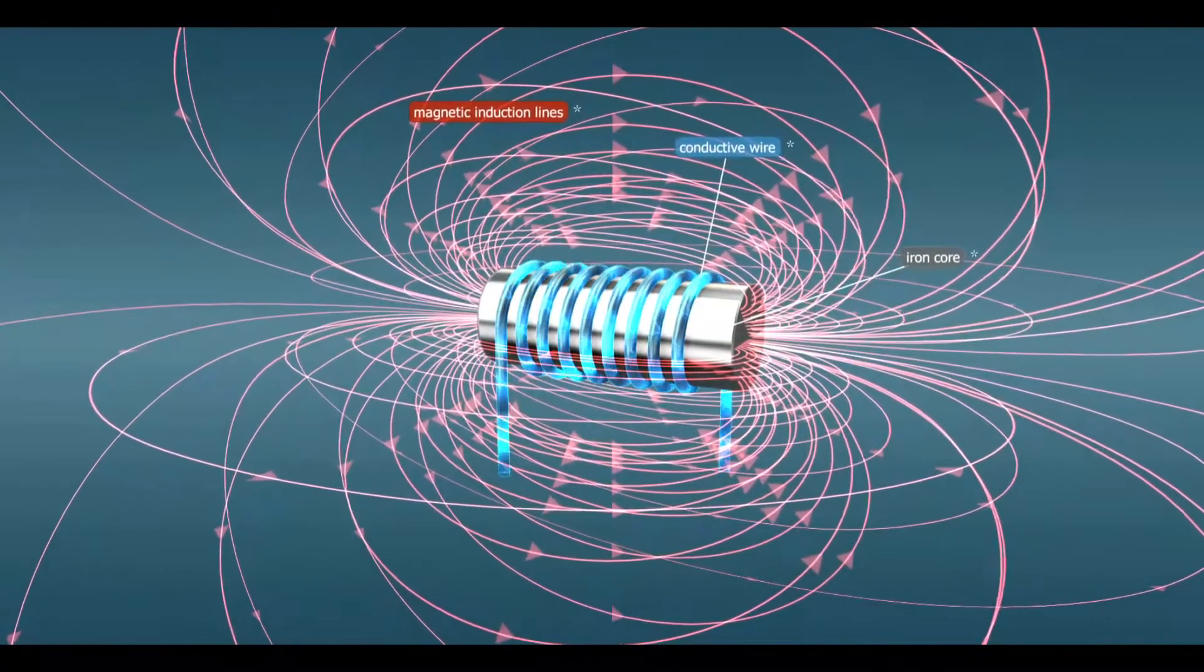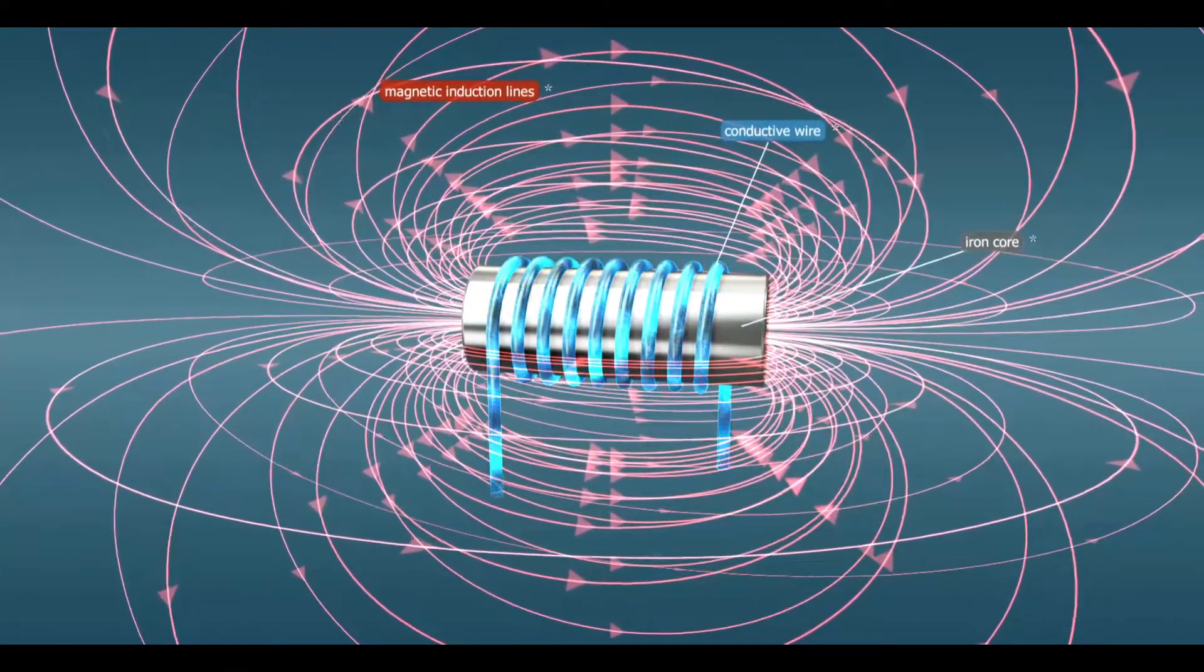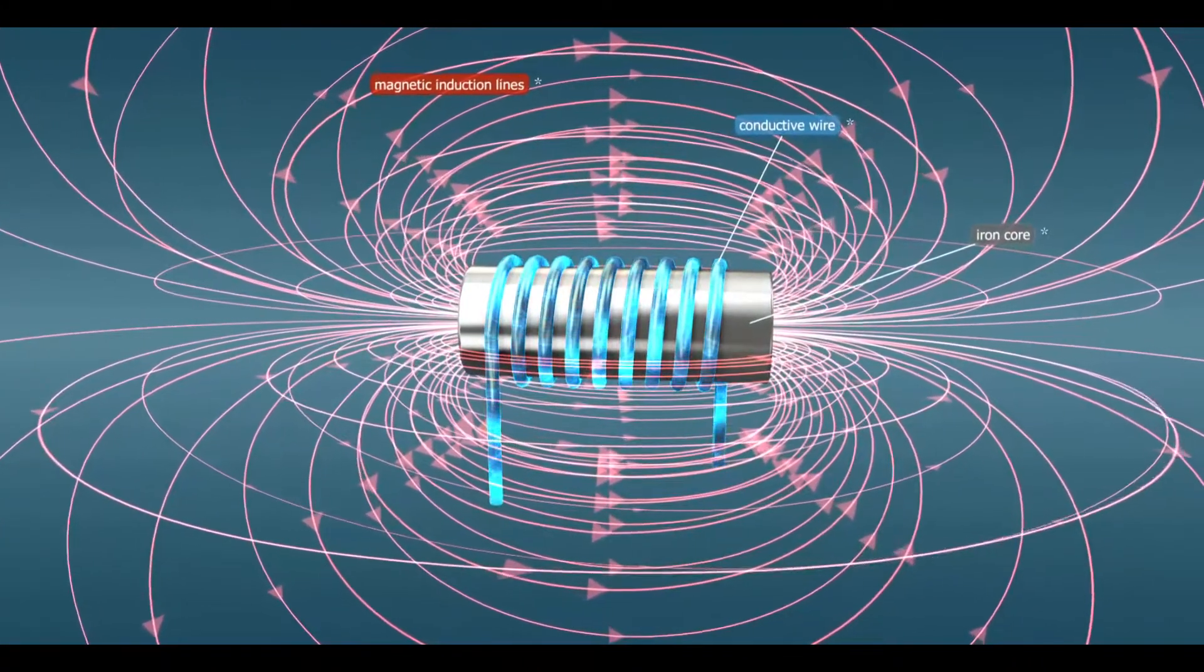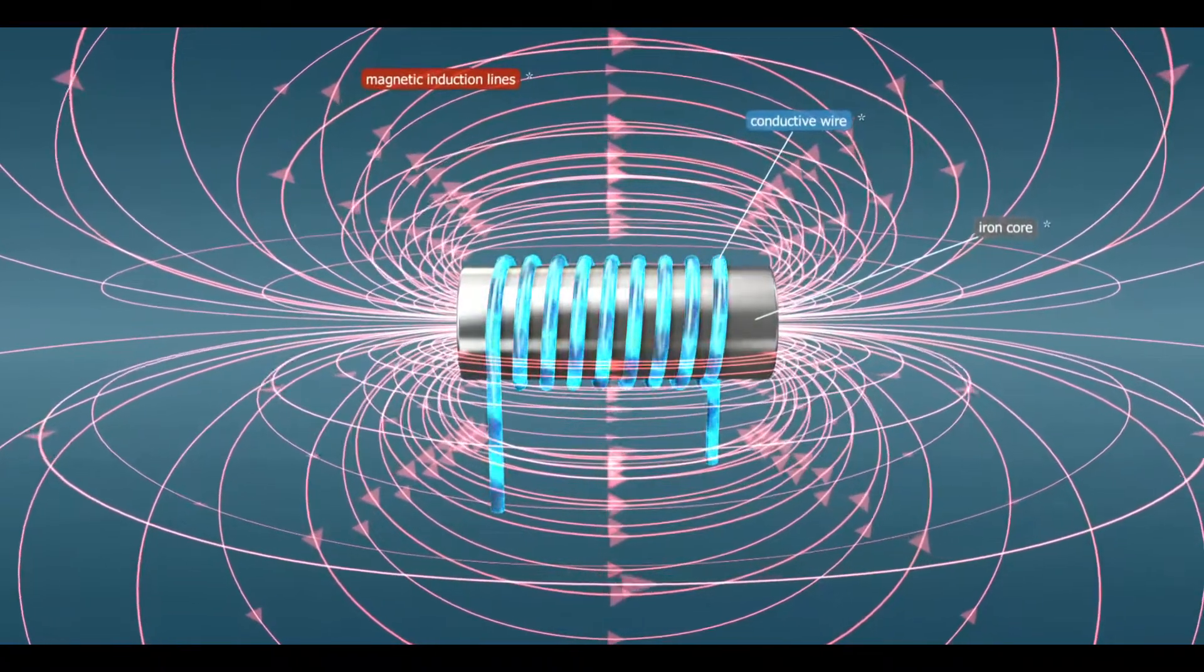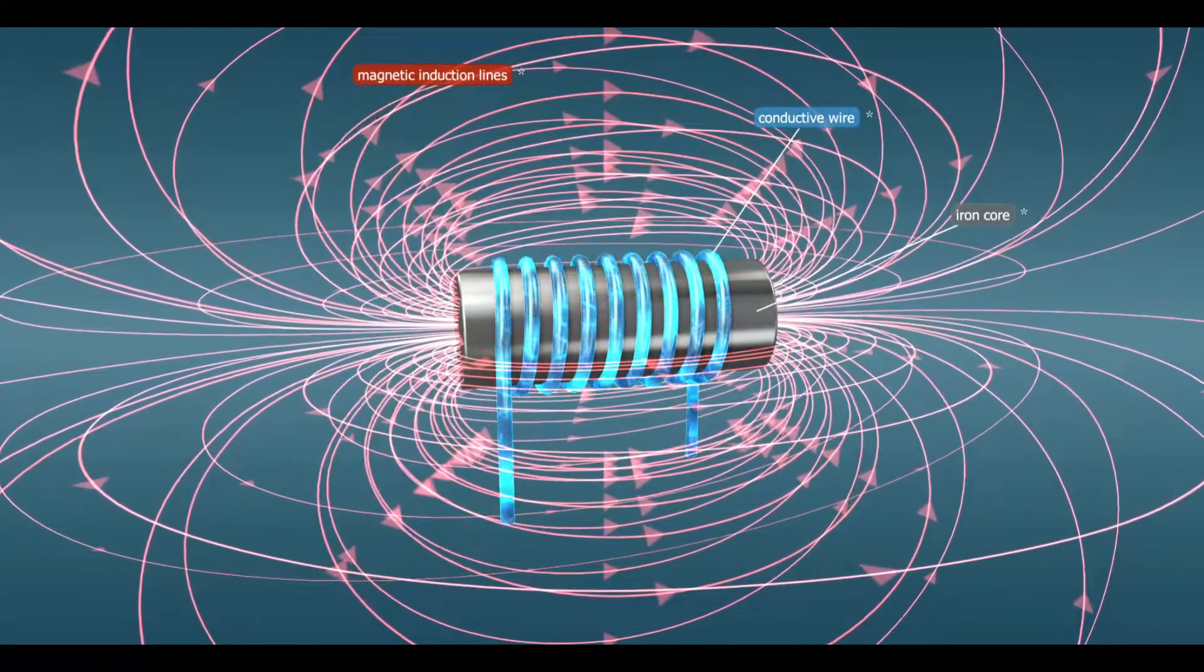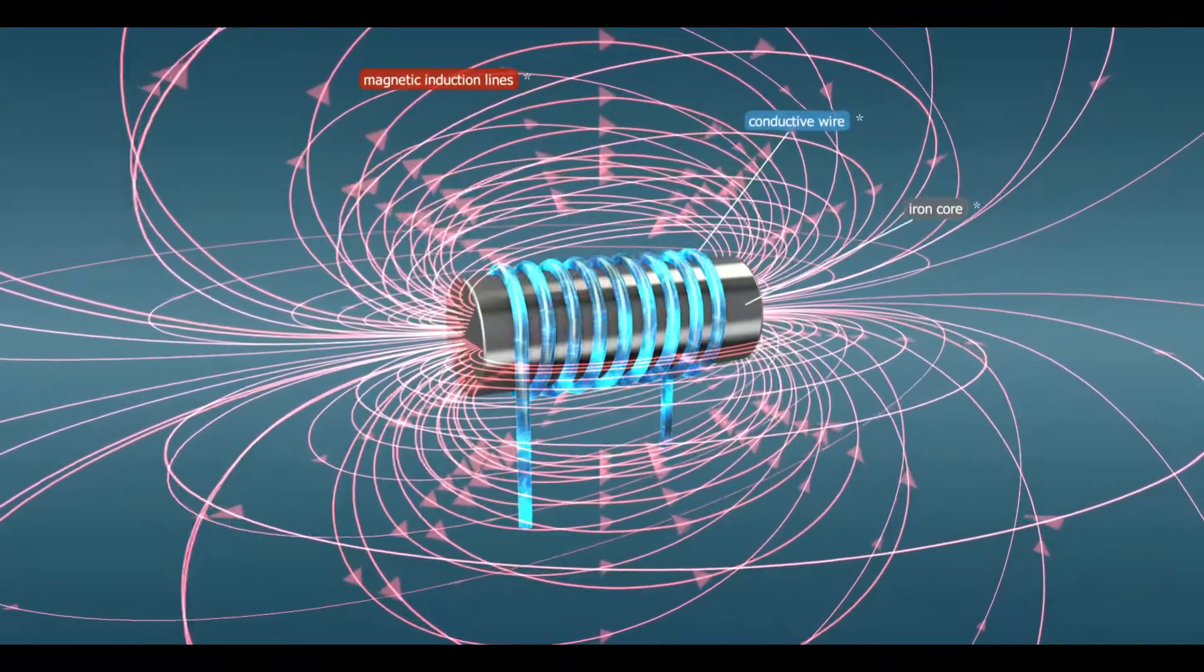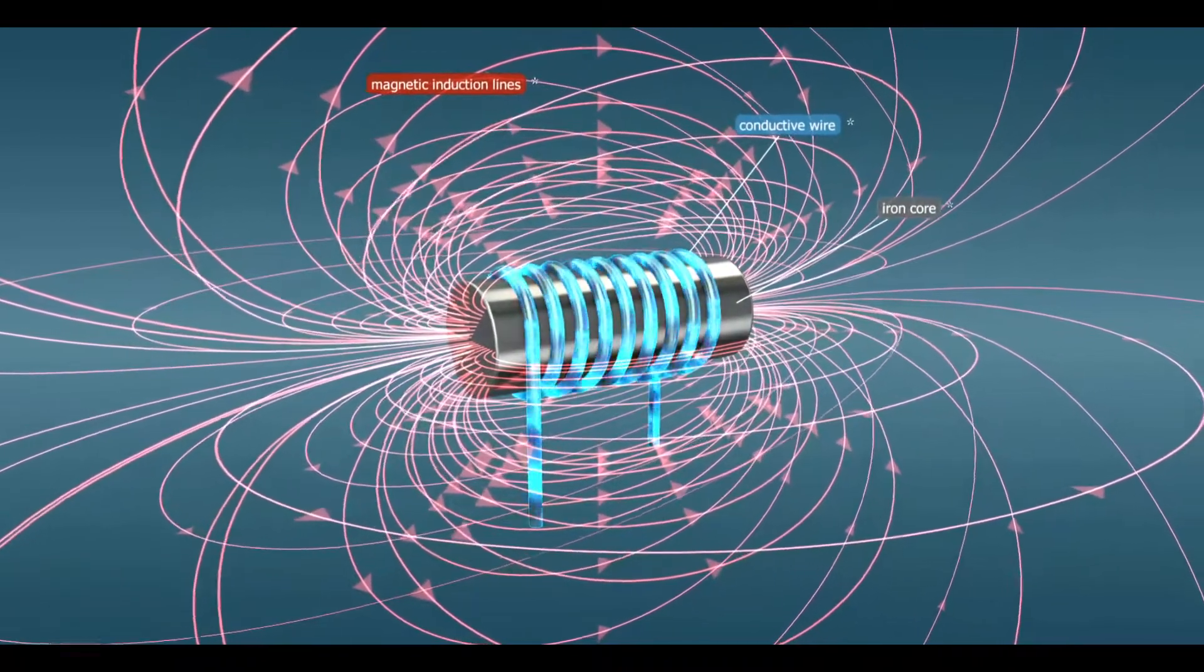The magnetic field generated by the current can be further strengthened by winding the wire into a coil. The coil thus made is the electromagnet, which is found in all electric motors. The strength of the electromagnet and the position of its poles can be adjusted with the current flowing through it.